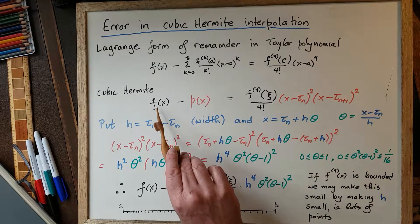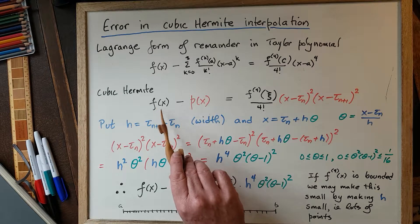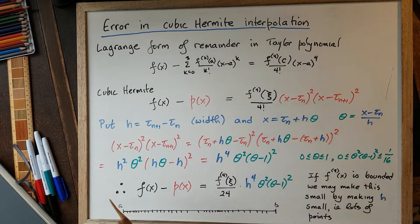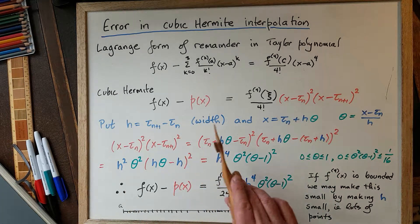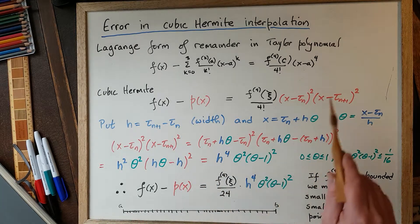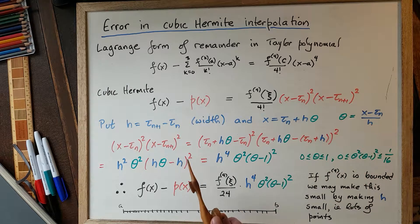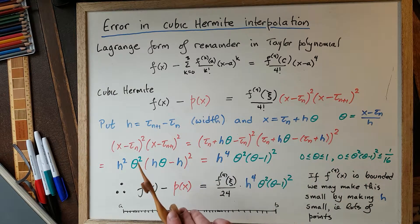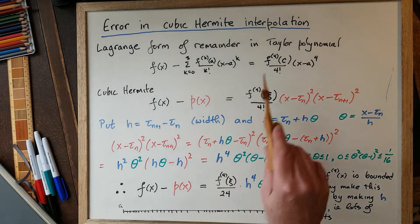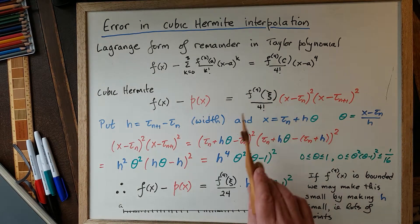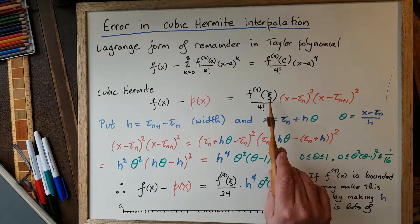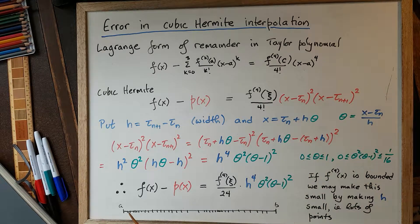And the derivative of f, namely f', minus the derivative of p, namely p', will also be 0 at x equals τ_n because this is a double 0 here. And the derivative will be 0 at x equals τ_{n+1}. So we have a degree 4 condition for approximating by a cubic polynomial just as in the Taylor polynomial case. And just as in the Taylor polynomial case, there is a proportionality constant out in front, which is the fourth derivative of f evaluated somewhere in the interval, divided by 4 factorial.